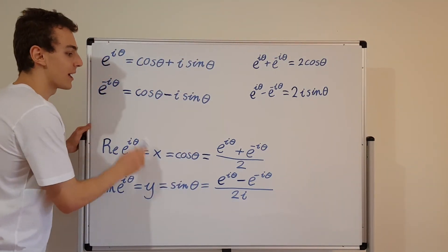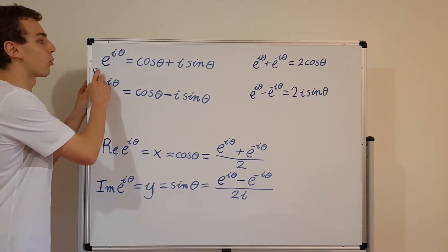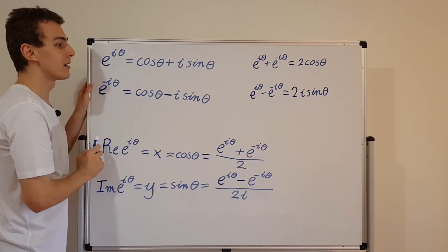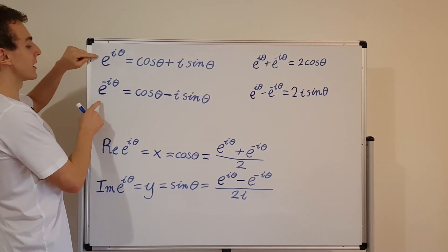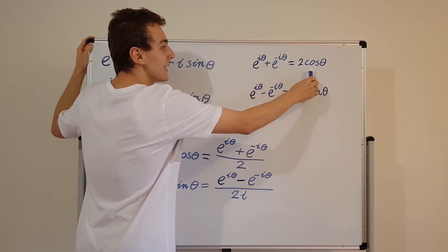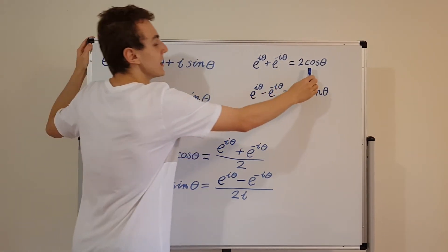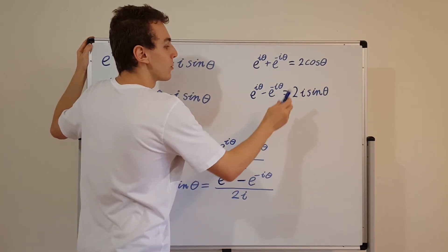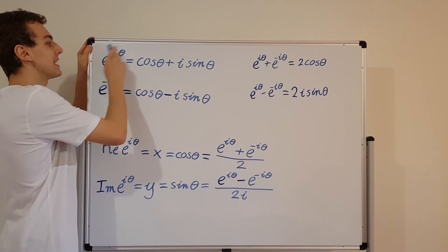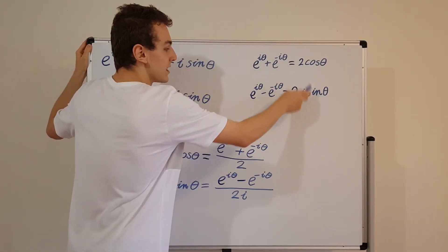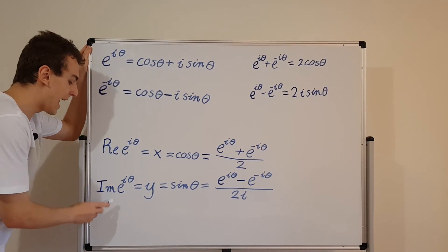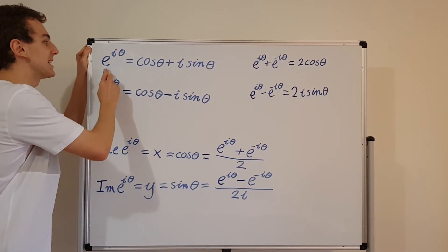So this is what we managed to derive in this video. We started with Euler's formula, took its complex conjugate to get the second expression, then added Euler's formula to its complex conjugate. Adding gave us the left-hand side sum of exponentials, and on the right-hand side the imaginary components cancelled, leaving double the real component. Subtracting the complex conjugate from e to the i theta left us with 2i times the imaginary component. Dividing by 2 and by 2i gave us the cosine and sine expressions.